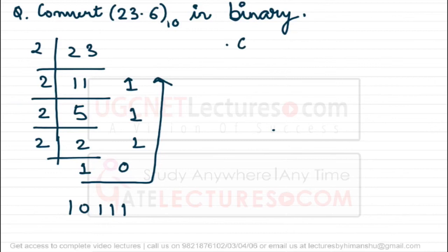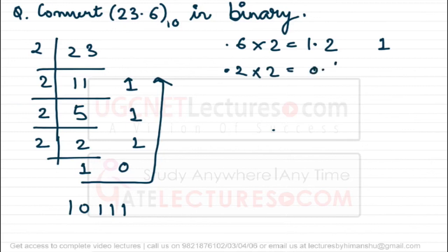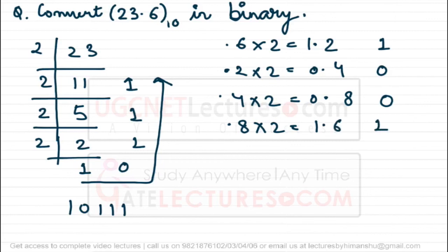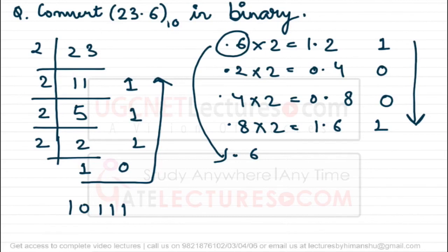Now for the fractional part 0.6. Multiply 0.6 × 2 = 1.2 — integral part 1. Multiply 0.2 × 2 = 0.4 — integral part 0. Multiply 0.4 × 2 = 0.8 — integral part 0. Multiply 0.8 × 2 = 1.6 — integral part 1. Notice we have 0.6 again — the same value we started with. This means the fraction will never terminate; it will repeat again and again. So the fractional bits are 1, 0, 0, 1 repeating.